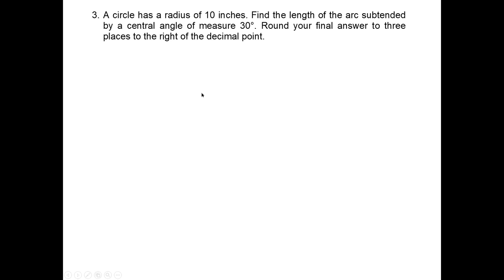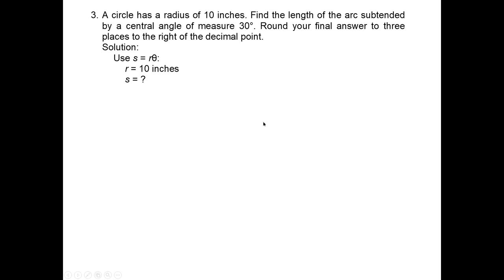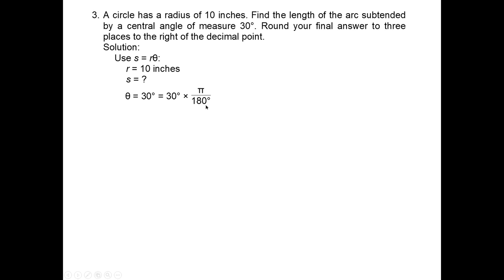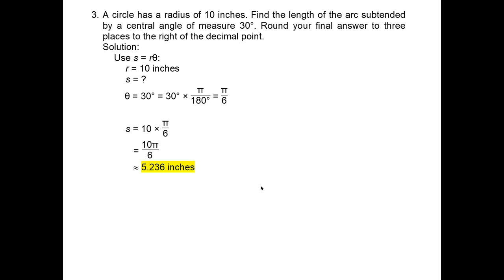A circle has a radius of 10 inches. Find the length of the arc subtended by a central angle of 30 degrees. Using s = rθ with r = 10, convert 30° to radians: 30 × π/180 = π/6. So s = 10 × π/6 = 10π/6 ≈ 5.236 inches.